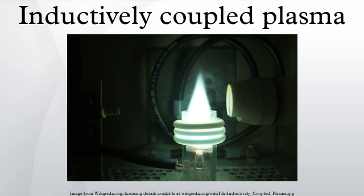Applications: plasma electron temperatures can range between 6000K and 10000K, comparable to the surface of the sun. ICP discharges are of relatively high electron density, on the order of 10^15 cm^-3. As a result, ICP discharges have wide applications where a high-density plasma is needed.